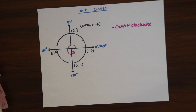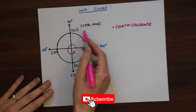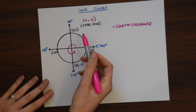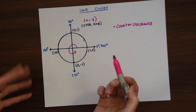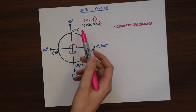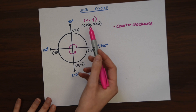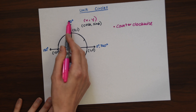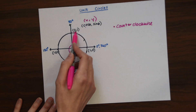Another important thing about unit circles is cosine of theta and sine of theta. All this is doing is representing the x and y values. All the x values are represented by cosine of theta and all the y values are represented by sine of theta. For example, if we wanted to know the value of cosine of 90 degrees, we look at the x coordinate at 90 degrees, and it would just be 0.